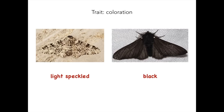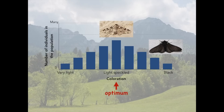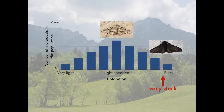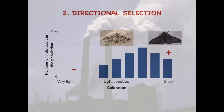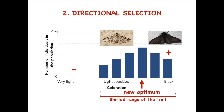An example of directional selection is coloration in peppered moths. Before the industrial revolution, the optimum value was a light speckled moth that could blend into the bark of trees. Notice that in this original population, dark moths did exist, just in low numbers. As soot began to build up on trees, those dark moths had an increasing advantage of camouflage in this changing environment. The light moths were no longer camouflaged as well — the light color was selected against, and the dark color was selected for. A shift occurred in the range and optimum of this trait.